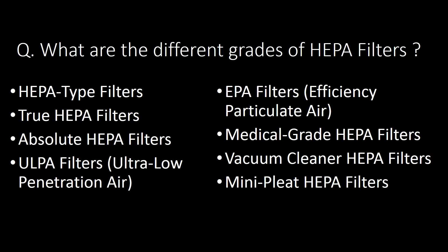What are the different grades of HEPA filters? Eight major grades of HEPA filters are: 1. HEPA type filter, 2. True HEPA filter, 3. Absolute HEPA filter, 4. ULPA filters, 5. EPA filters, 6. Medical Grade HEPA filters, 7. Vacuum Cleaner HEPA filters, and 8. Mini-PLEAT HEPA filters.